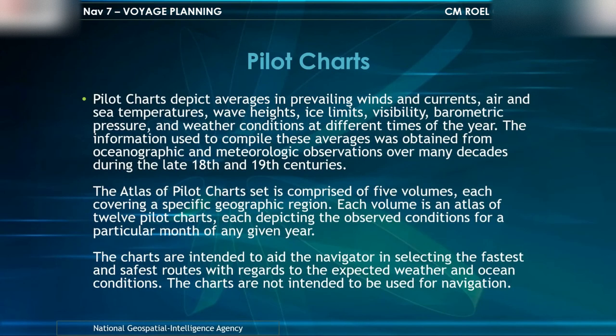Pilot Charts depict averages of prevailing winds and currents, air and sea temperatures, wave heights, ice limits, visibility, barometric pressure, and weather conditions at different times of the year. The information used to compile these averages was obtained from oceanographic and meteorological observations over many decades during the late 18th and 19th centuries.